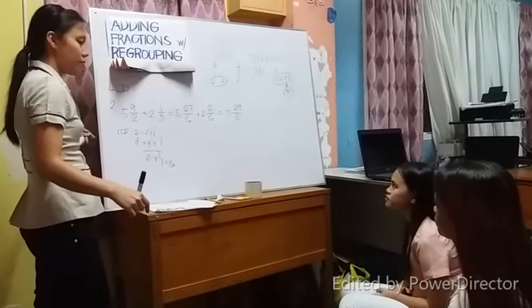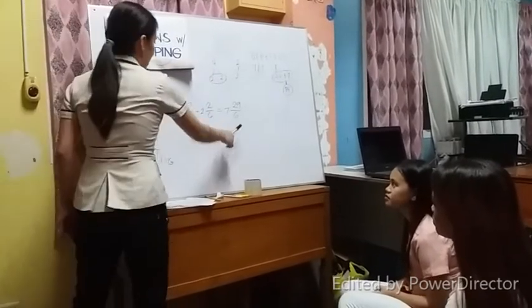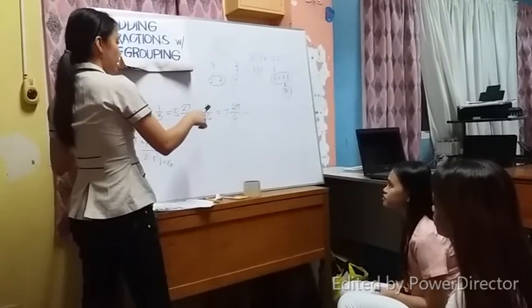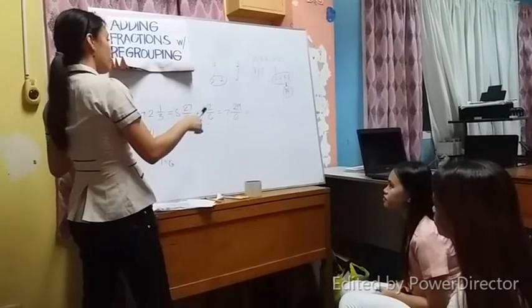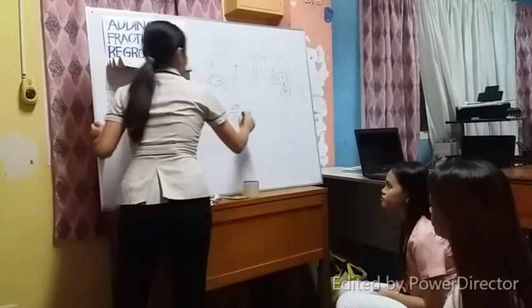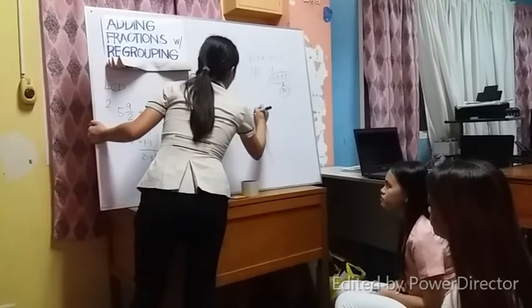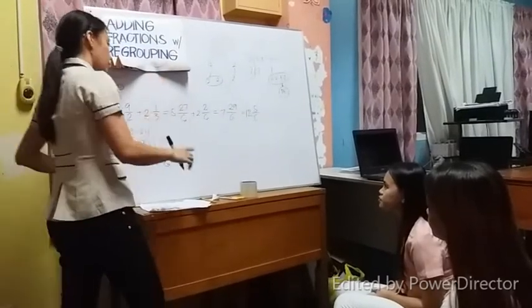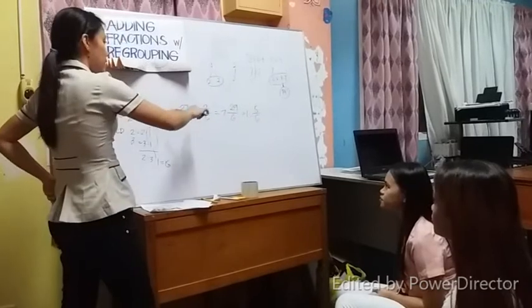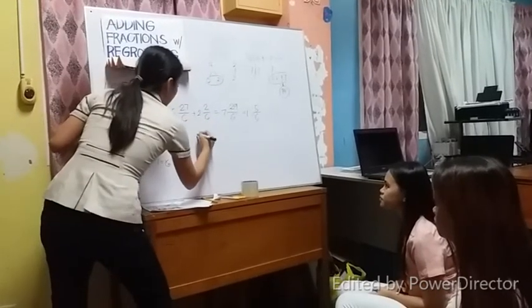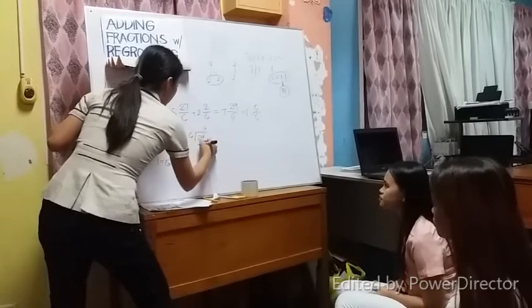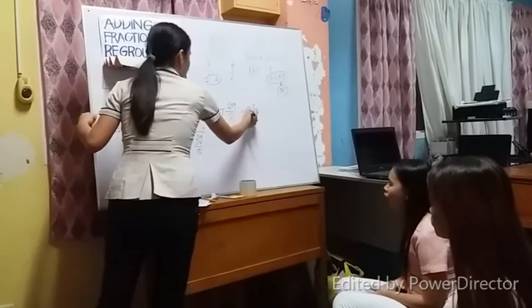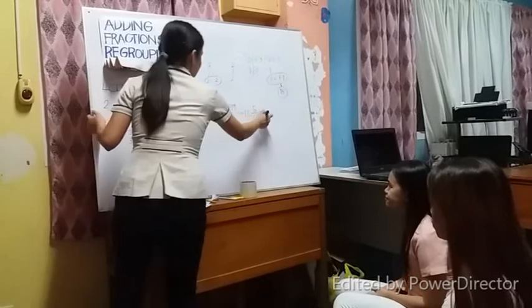So 5 plus 2 is 7, then 27 plus 2 is 29 over 6. Is this in its simplest form? Not yet, because it's an improper fraction with a mixed number. So we convert it: 29 divided by 6 is 4 with a remainder of 5. So 7 plus 4 is 11 — I'm sorry class — and 5 over 6. So this is the final answer.